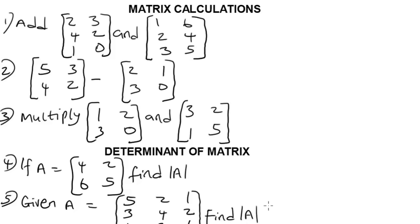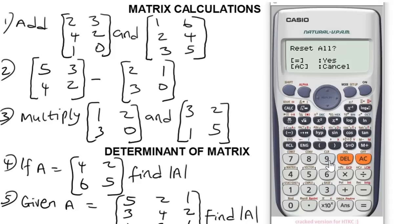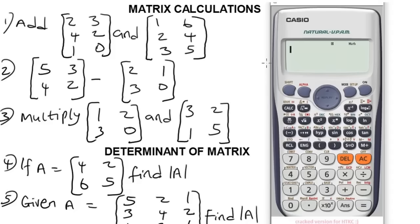Now let's get the Casio fx-991ES Plus calculator. The very first thing you have to do is clear the calculator to put it in default mode. To clear it, simply press the Shift button, then press 3, then press the AC button. Now we have cleared it — it is now in default mode.